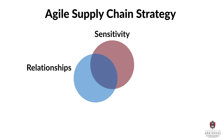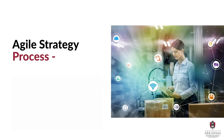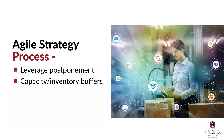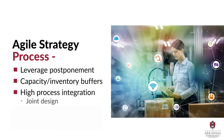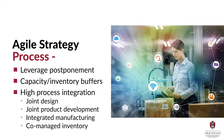Supply chain agility can also be enhanced by innovative processes. For example, postponement activities can reduce lead times and increase responsiveness under uncertain demand conditions without increasing costs. Capacity or inventory buffers also enable operations to withstand unpredictable spikes in demand or supply shortages. Increasingly, supply chain partners are relying on high degrees of process integration to share resources and expertise to collectively become more agile. Joint design and product development, integrated manufacturing, and co-managed inventory are examples of highly integrated processes that help facilitate relationships and information exchange between supply chain members in the pursuit of agility.